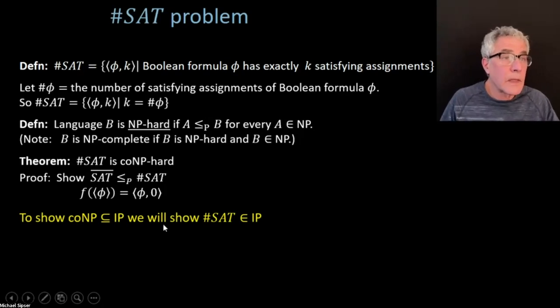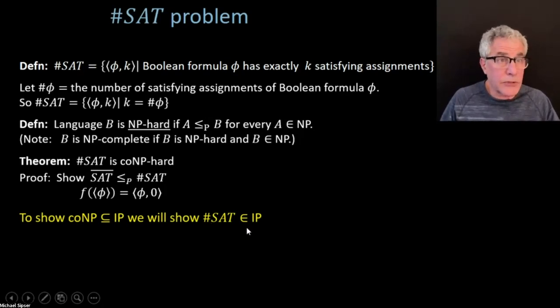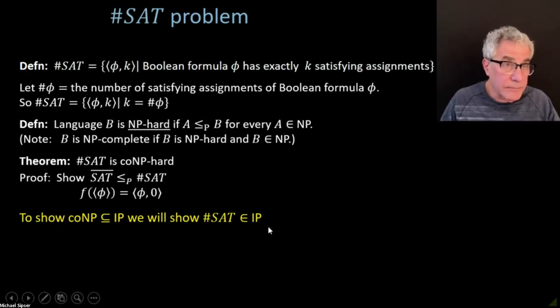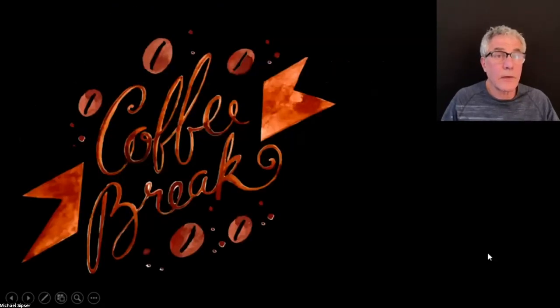So if you can tell how many satisfying assignments something has exactly, then you can solve co-NP. You can solve the unsatisfiability problem by asking for zero satisfying assignments, and that allows you to solve anything in co-NP. So we're going to just work with this one problem — the number set problem — and show that that problem's in IP.